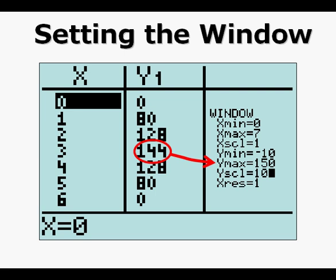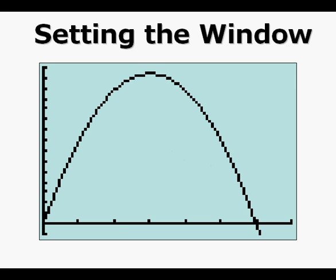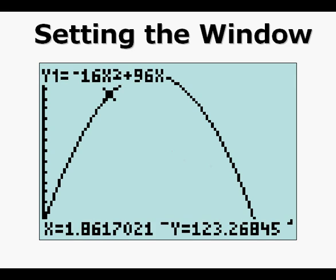Now if we press trace, we can trace along moving left or right with the arrow keys. Here we have x equals 1.8617021 and y equals 123.26845 feet, so we have time and feet.